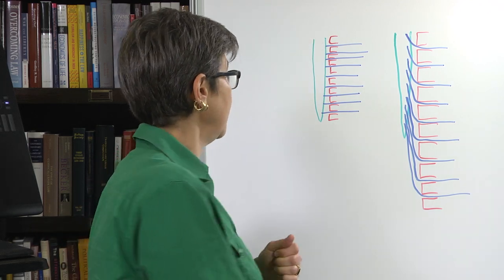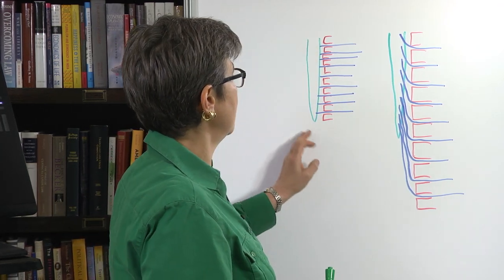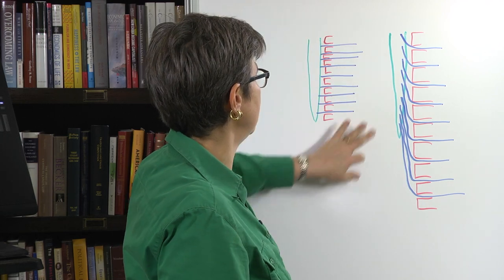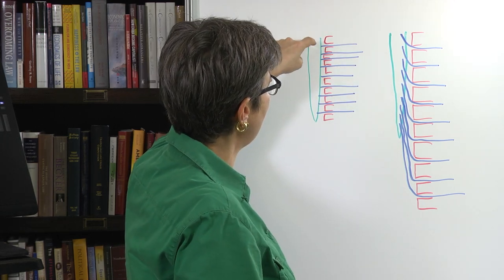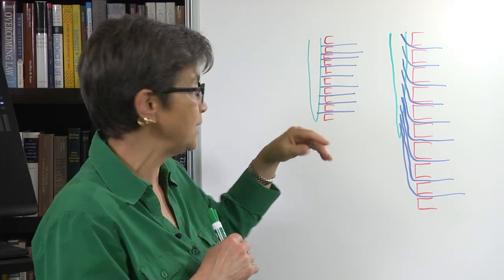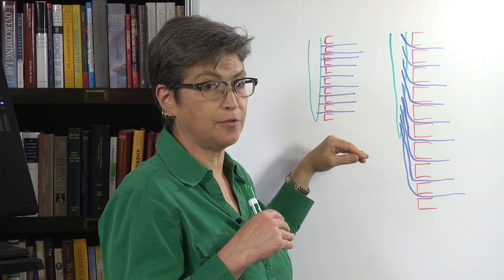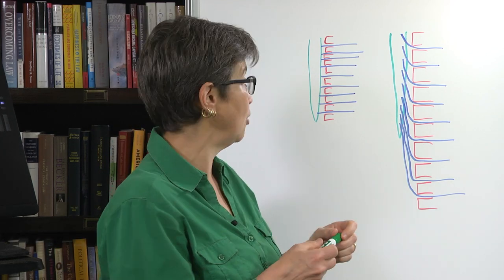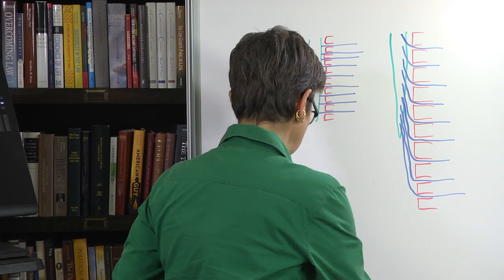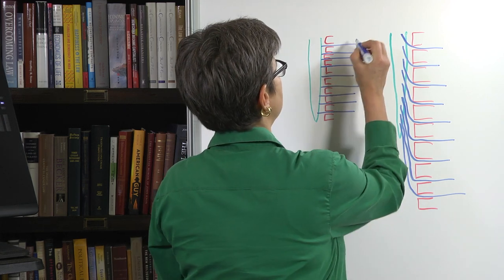During development, the spinal cord is a segmented structure, and it is paired with somites, which are developmental structures from which muscle and bone are going to develop. In the embryo, what you have is a spinal cord that is very well matched in length to the vertebral column, and also to the location of the somites.